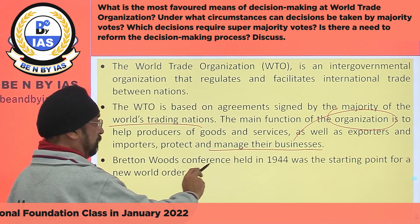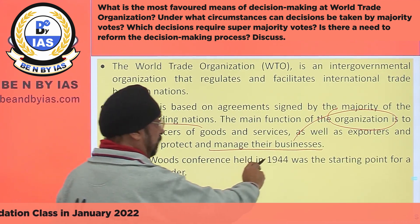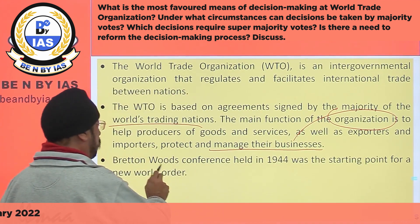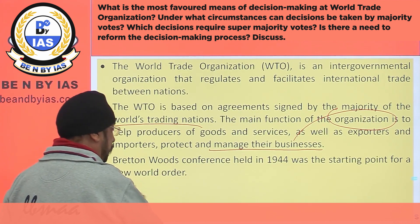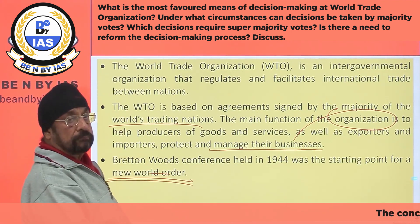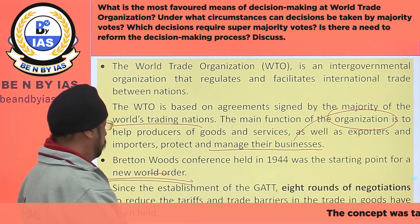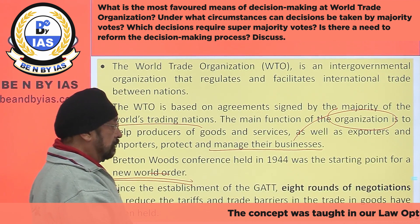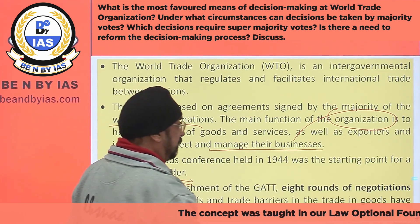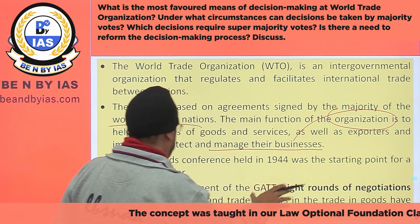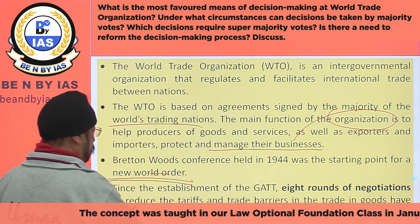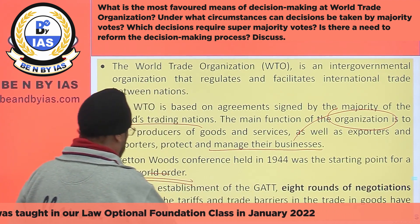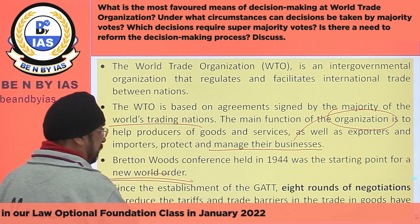The Bretton Woods Conference held in 1944 was the starting point for a new world order. Since the establishment of GATT, eight rounds of negotiations to reduce tariffs and trade barriers have been held.